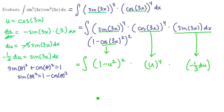If we clean it up, this is the integral of negative 1 third u to the fourth times 1 minus u squared quantity squared du. This is something that we can expand. We can foil out this interior part and distribute through. So let's just run it through.